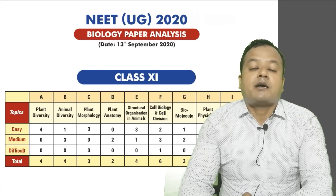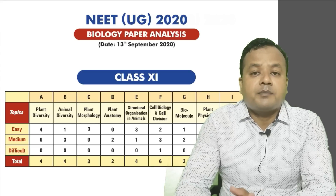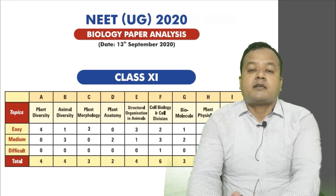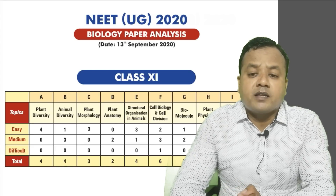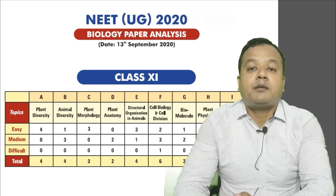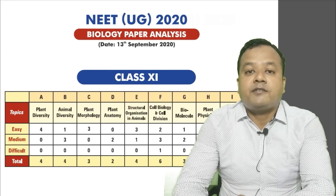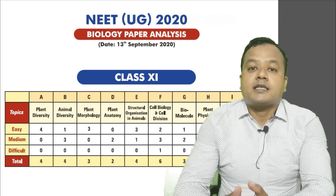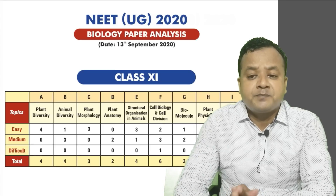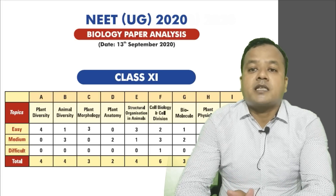जो कटऑफ रहेगा, कुछ दिन बाद आप देख सकते हैं। जो एक्सपेक्टेड कटऑफ है, वो आ सकता है, लेकिन बहुत ज्यादा डिफरेंस नहीं — exactly same रहने वाला है। 2 से 4-5 नंबर, maximum 10 नंबर का difference किसी एक college में हो सकता है। Otherwise 2019 की जो analysis थी, 2018 और 2017 की जो analysis हम लोगों ने आप लोगों के साथ share किया है, बिल्कुल same कटऑफ रहने वाला है।